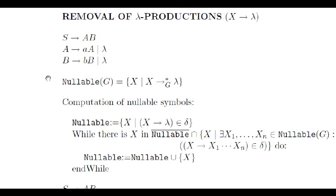In order to remove the lambda productions, we'll first compute the set of nullable variables, that is, those variables that can be rewritten into the empty word in one or more rewriting steps.